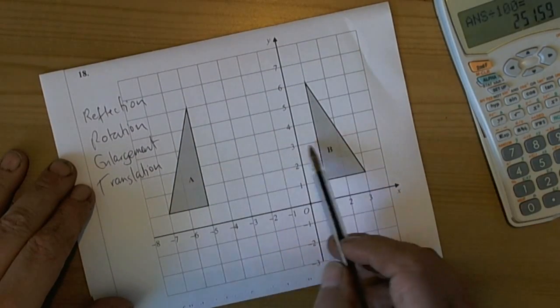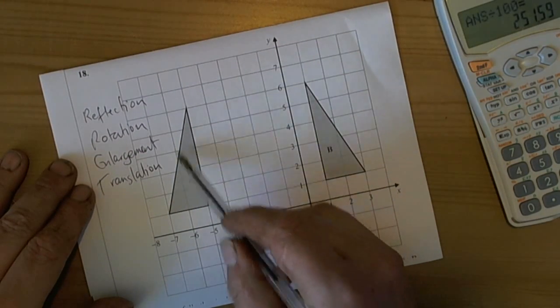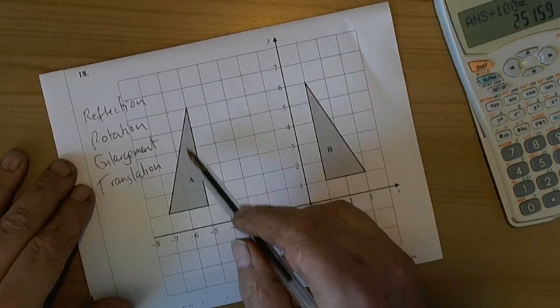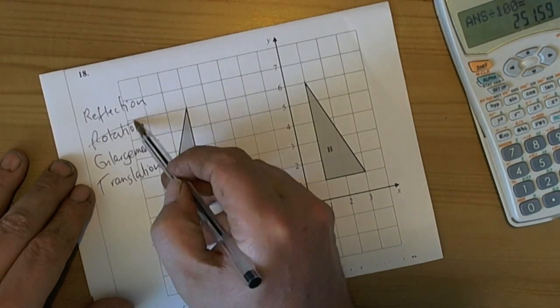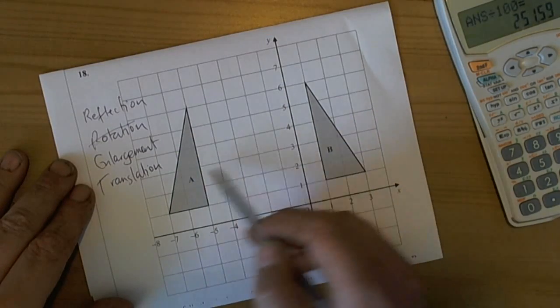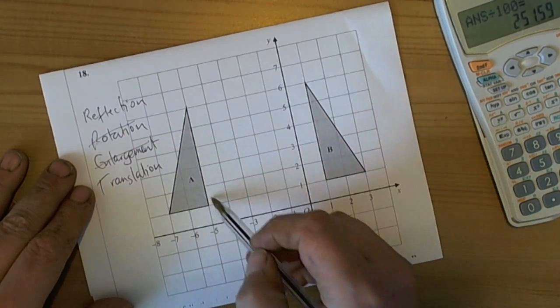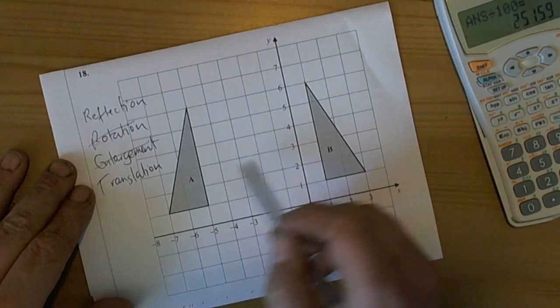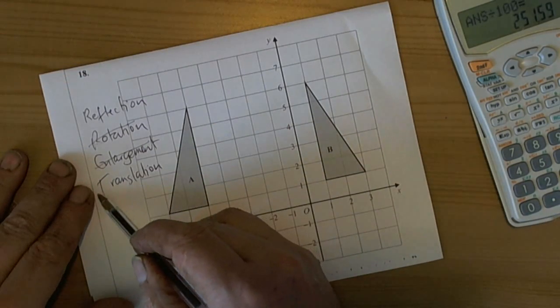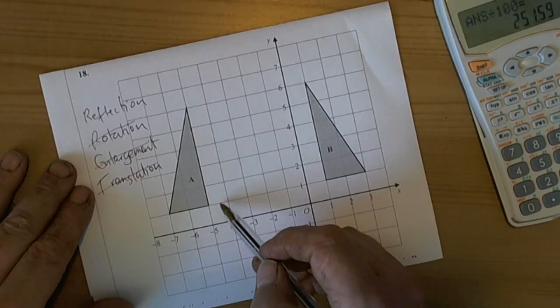So we ask ourselves, what's actually happened? Well, it hasn't turned around, so it doesn't look as though it's going to be a rotation. The shape hasn't got bigger or smaller, so it's not an enlargement. The two shapes are looking in different directions, so it can't be a translation. So we're left with reflection.